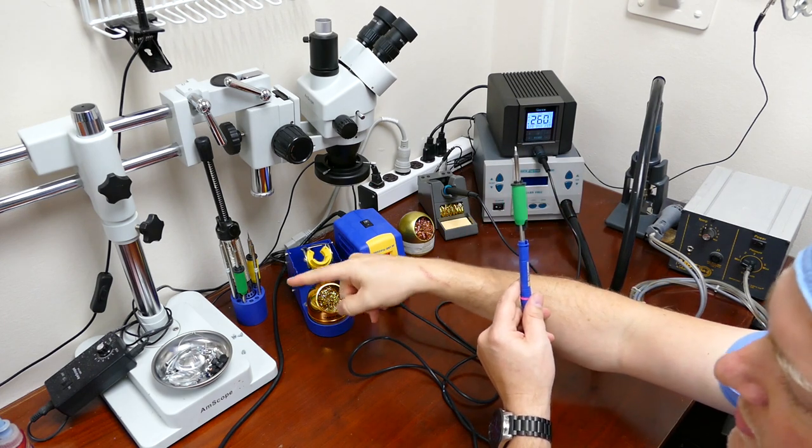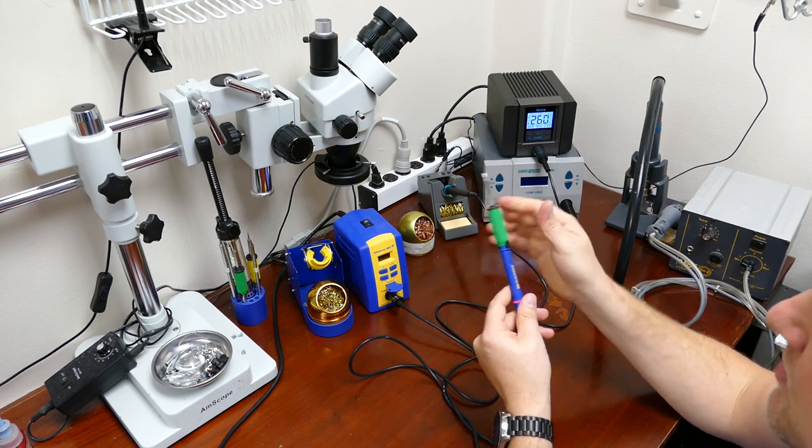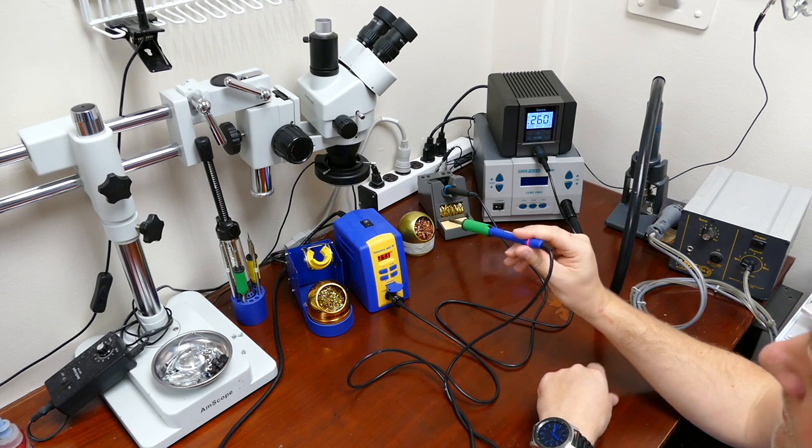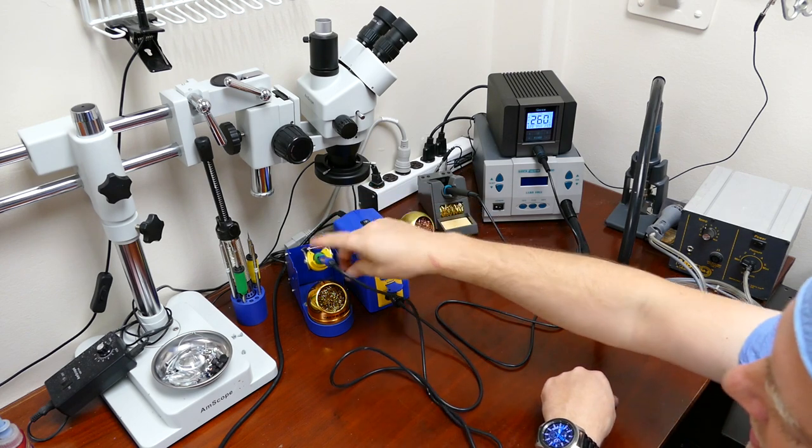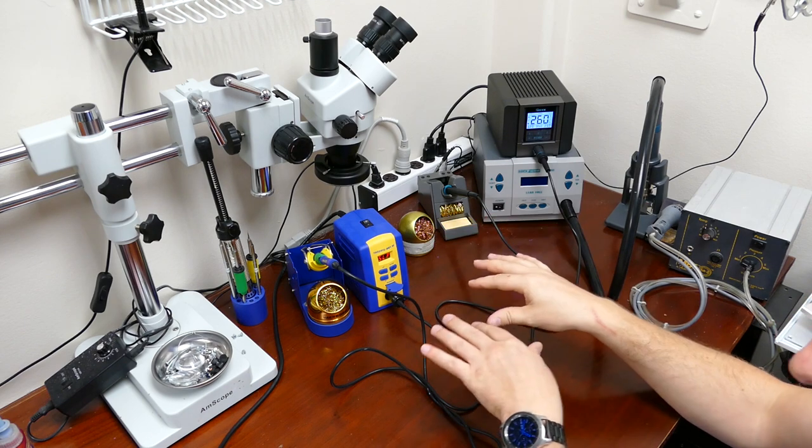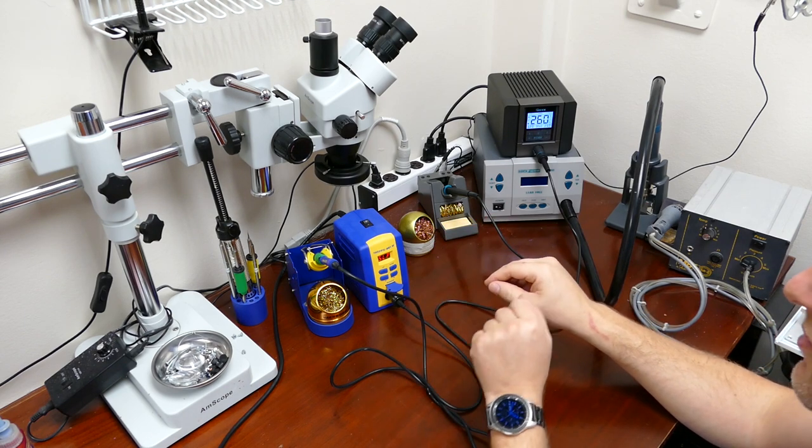You change tips, which I have a whole selection of tips here. You press on the new tip, and it goes into its heating mode. When you place the pencil on the cradle, it goes into a sleep mode, which is a decreased temperature, which prevents the tip from being oxidized.